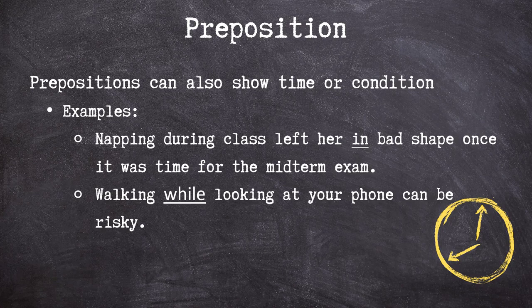Prepositions are also able to show condition or state of being in time. The preposition in, seen in our first example — napping during class left her in bad shape once it was time for the test — shows the unprepared condition the student found herself in when it was time for midterm exams. While tells us when in our second example: walking while looking at your phone can be risky. While helps provide a marker of time in this sentence.